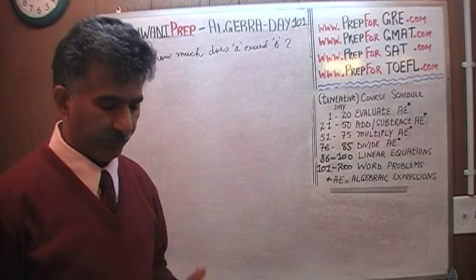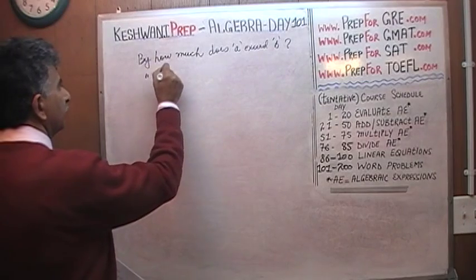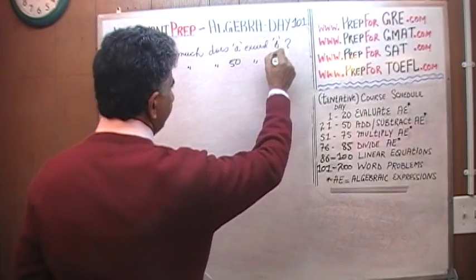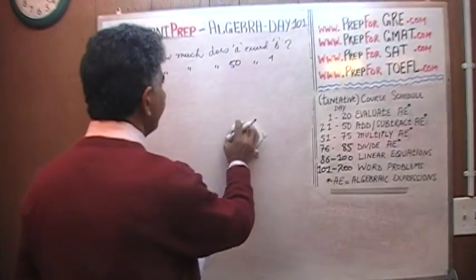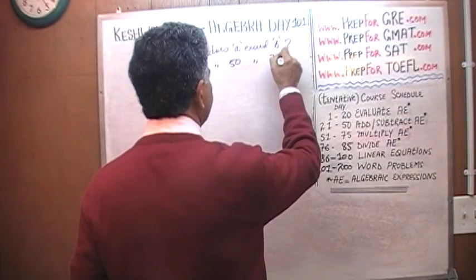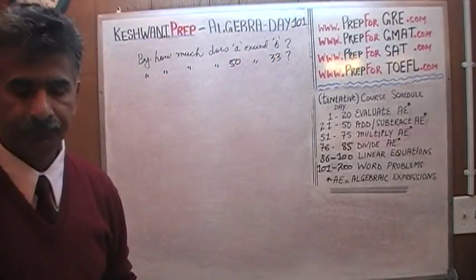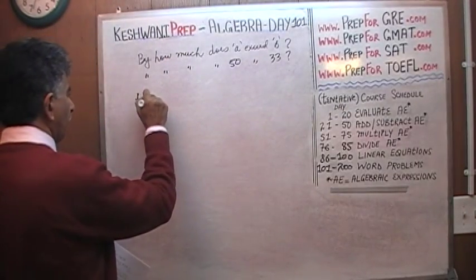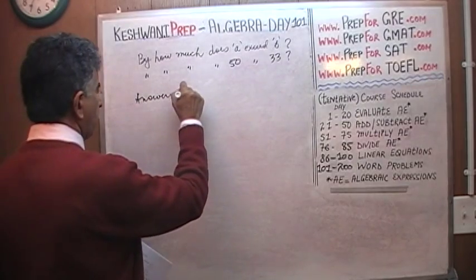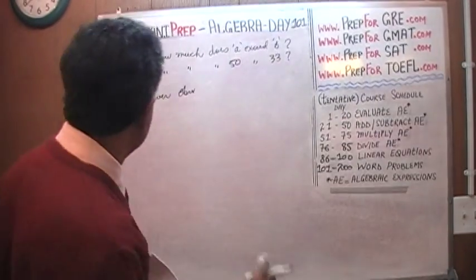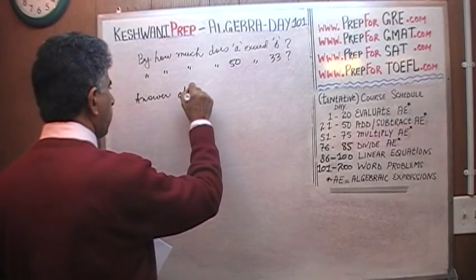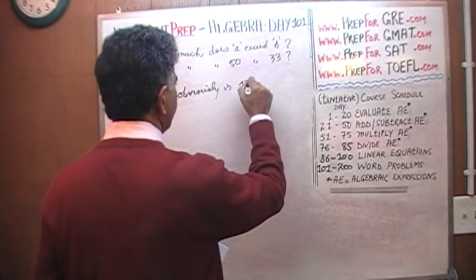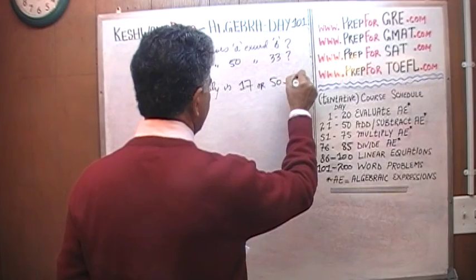Think of them as numbers, plug in numbers. For example, if somebody were to ask you, by how much does 50 exceed 33? What will we do? By how much does 50 exceed 33? Well, answer obviously is 17 or 50 minus 33.